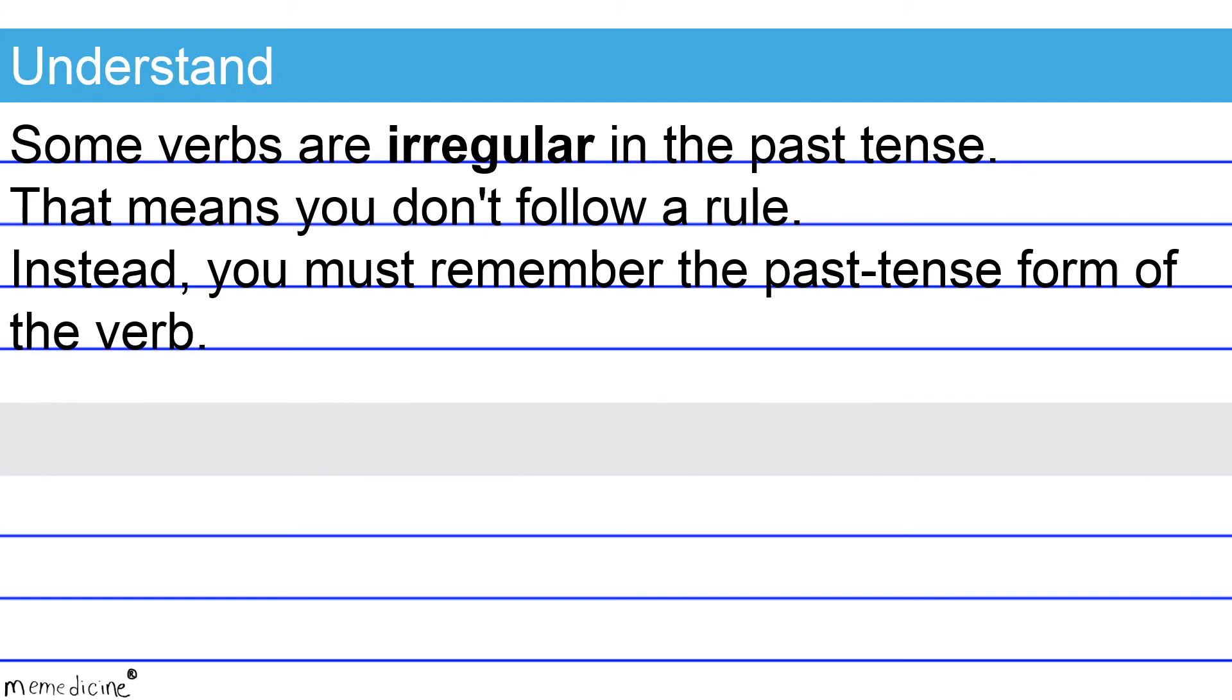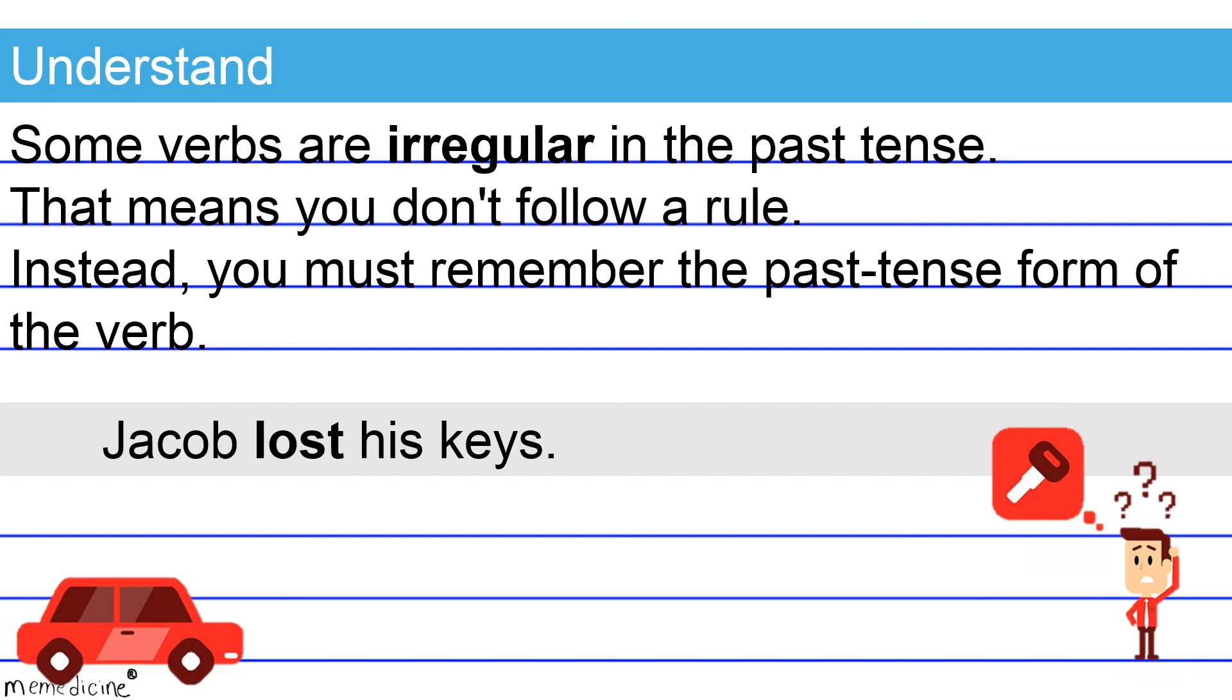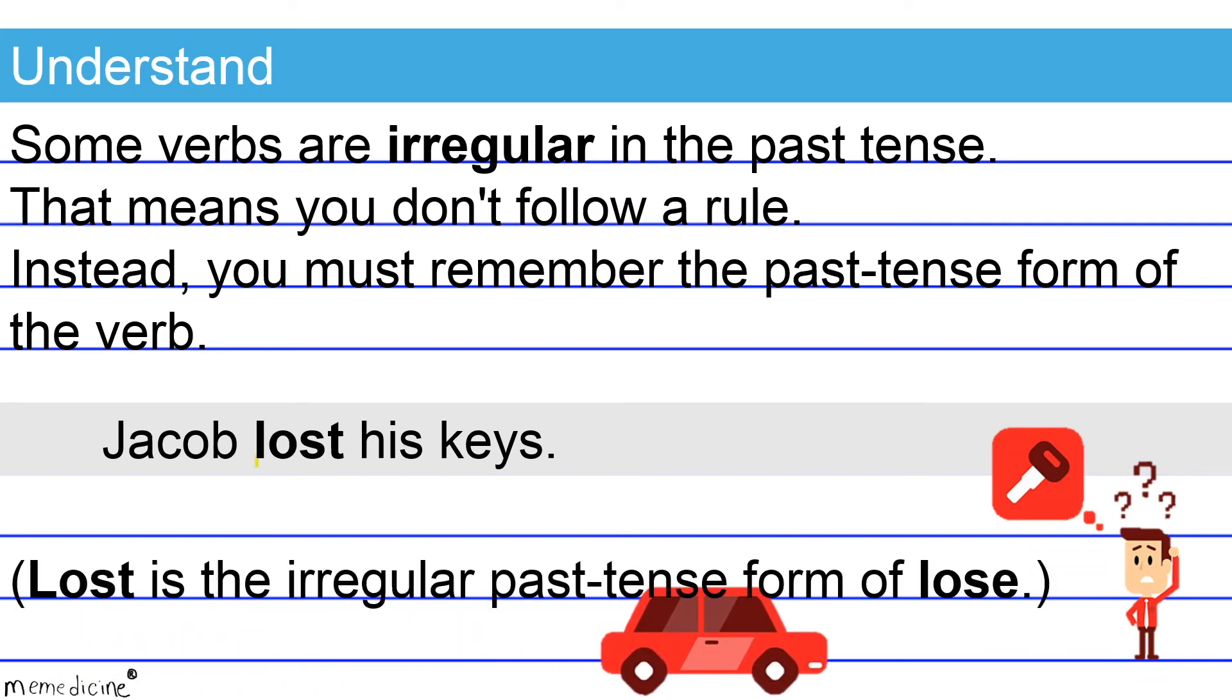Check out this example: Jacob lost his keys. Lost is the irregular past tense form of the verb lose. This is a correct shift and the overall sentence is formatted correctly.